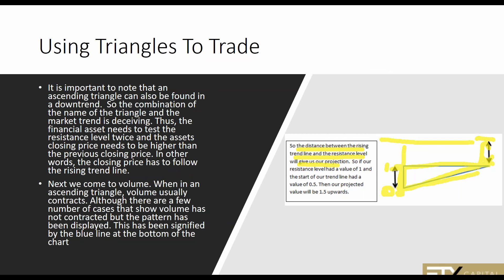When in an ascending triangle, volume usually contracts. Although there are cases where volume has not contracted but the pattern has still displayed, volume appearing at the bottom of the chart should be dropping. As price moves into the center of a triangle, you tend to have less and less trading action. My rule of thumb is that as price moves into the point of the triangle, volume should be steadily dropping — it tells you that traders are less and less sure. If you don't have that, I would say the market is not interpretable at the moment.